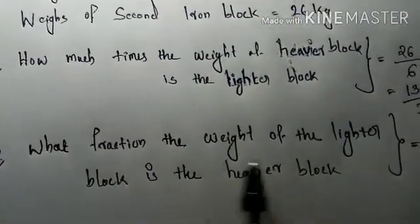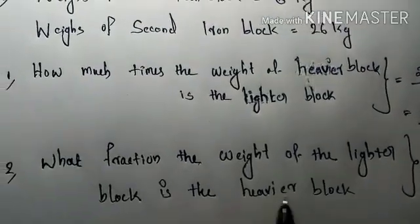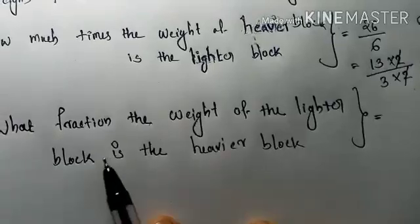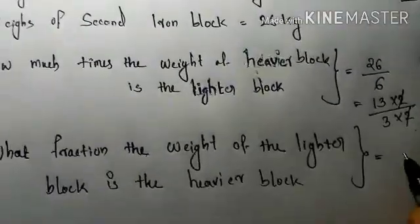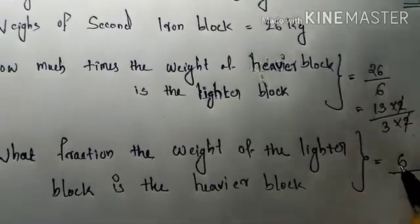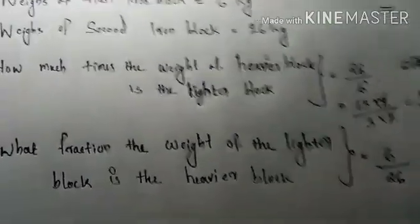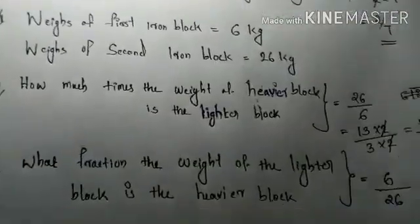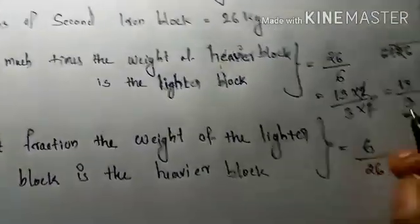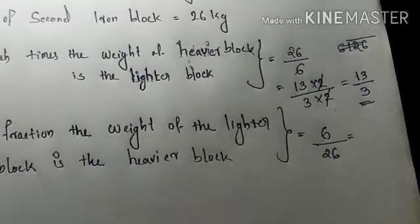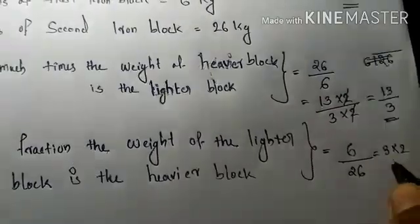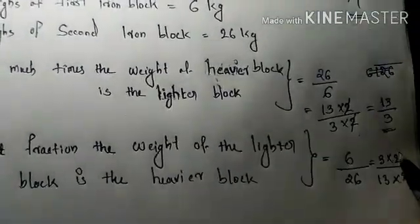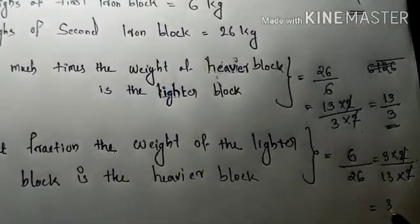Second question: what fraction of the weight of the lighter block is the heavier block? We look at the lighter block of 6 kg. 6 is 3 into 2 and 26 is 13 into 2. We cancel the common factor 2, so the answer is 3 by 13.